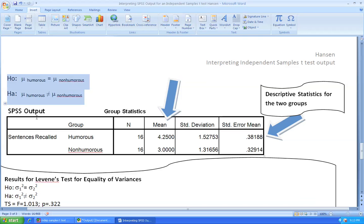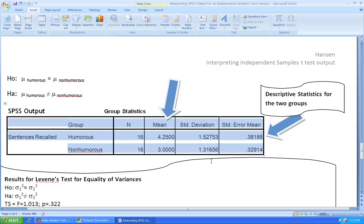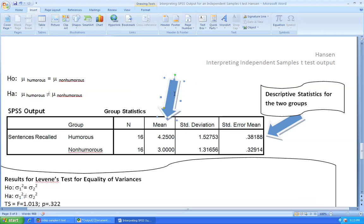The first piece of output that is provided by SPSS contains the descriptive statistics for the two groups. Note that we will pay particular attention to the two sample means: 4.25 for the humorous group and 3.0 for the non-humorous group. Those two sample means serve as the basis for the computation of the test statistic. The standard deviations of the two groups are also provided as well as the standard error for the two groups.